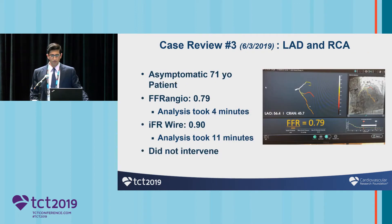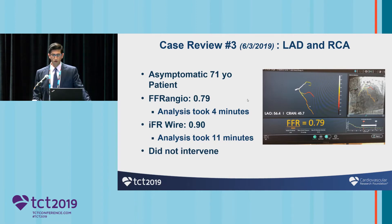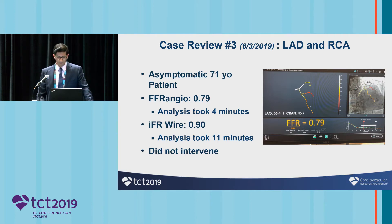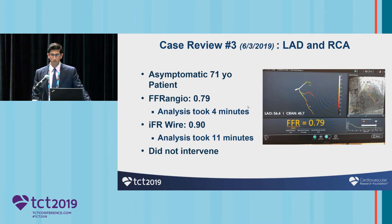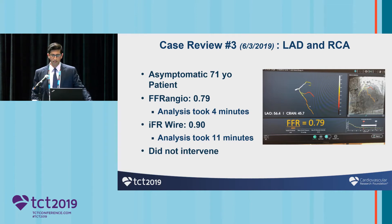A third case: an asymptomatic 71-year-old gentleman. The FFR angio was 0.79 — borderline — and the analysis took only four minutes. The IFR wire was 0.9, and that analysis took 11 minutes, as this was early in the experience when we were still looking for concordance or discordance between modalities. Given the patient was asymptomatic and the result was borderline, the decision was made not to intervene. This again confirms the system integrates nicely and is very efficient.